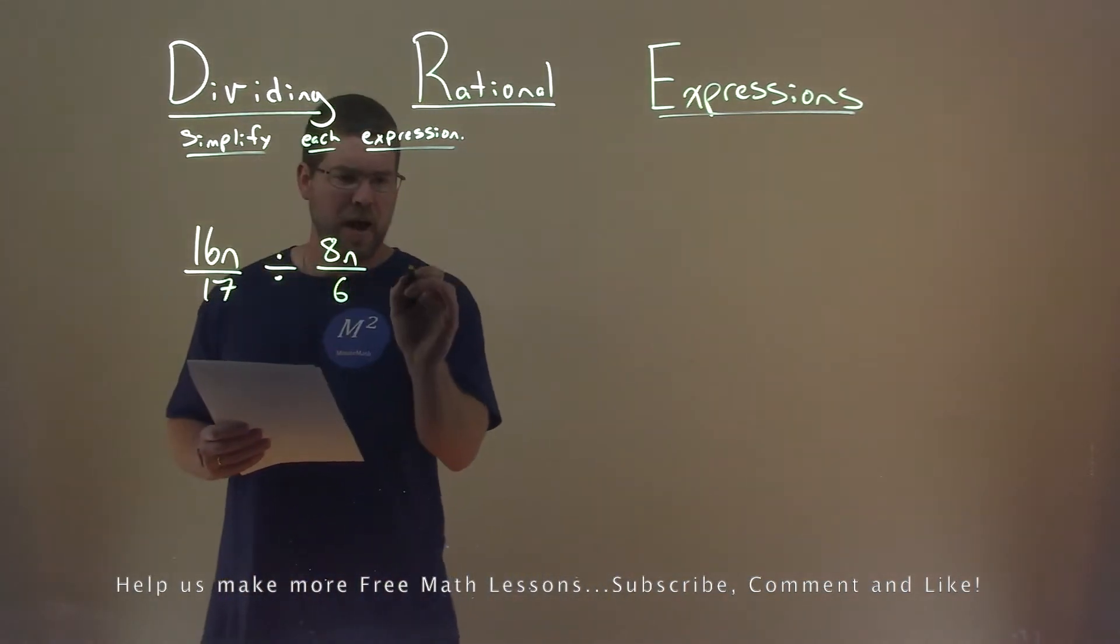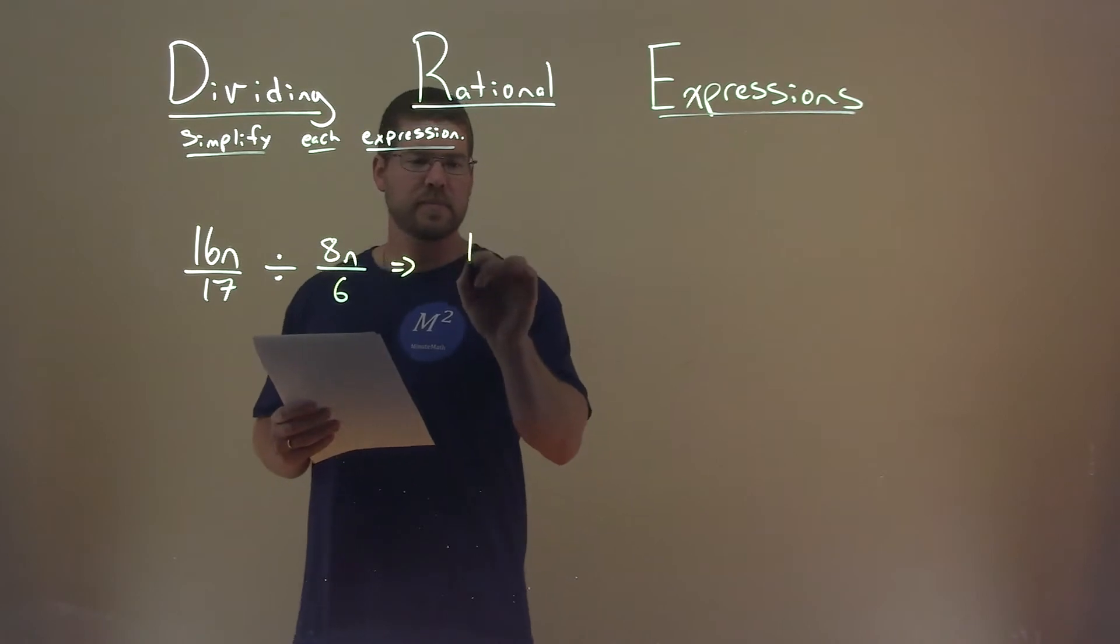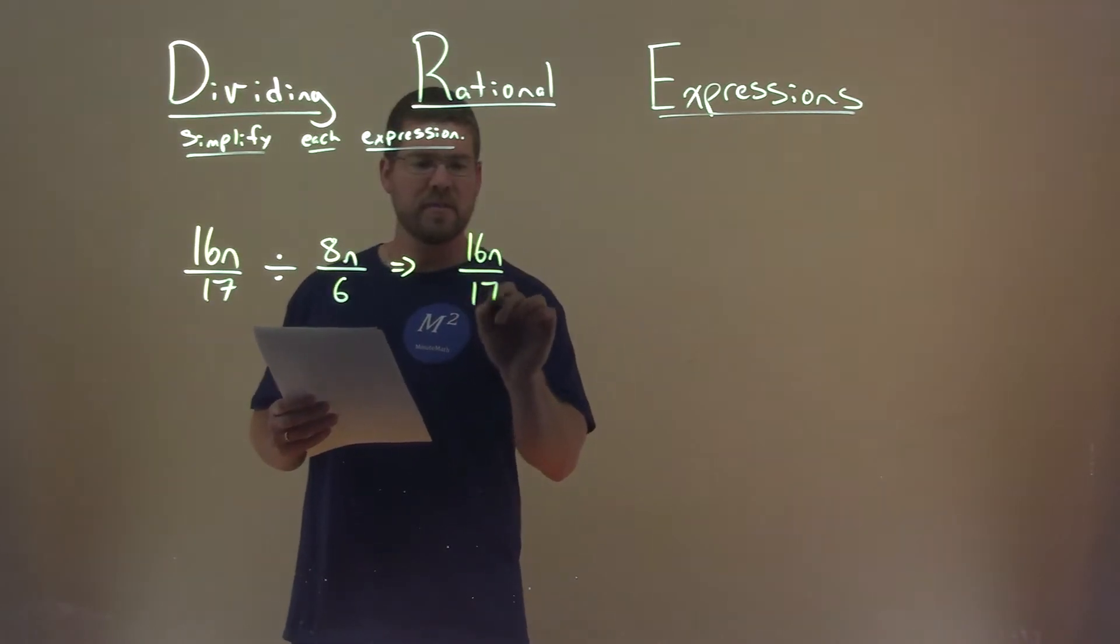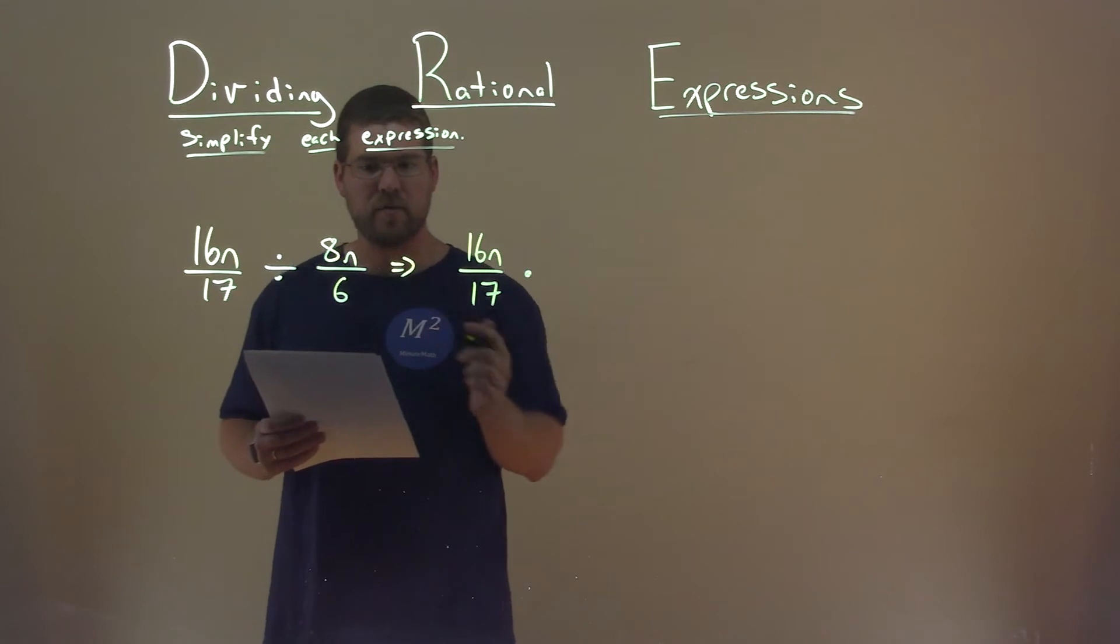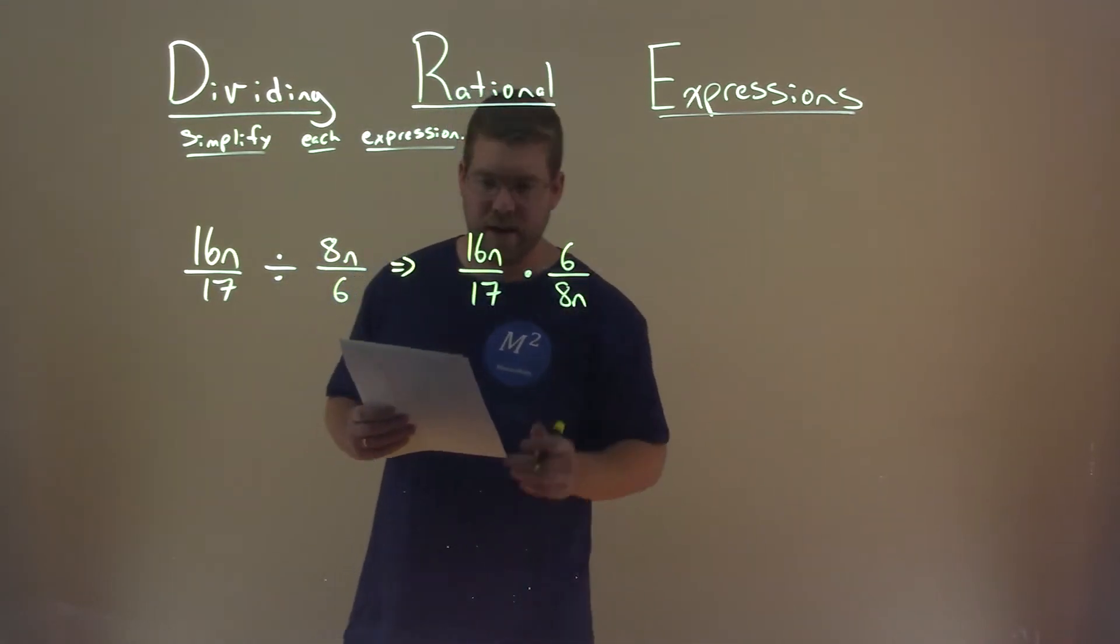Well, when I have division with fractions here, I like to rewrite this as a multiplication problem. So, 16n over 17, and we multiply now, and we just flip the second fraction. 6 over 8n now.